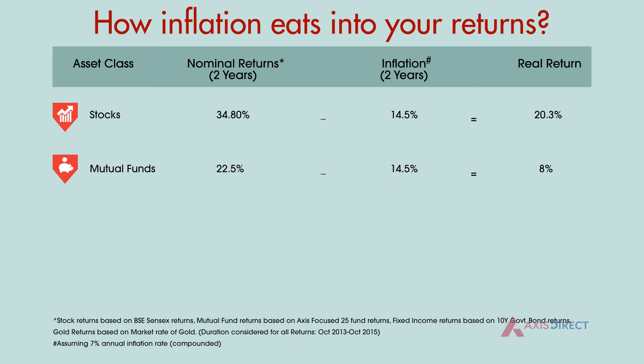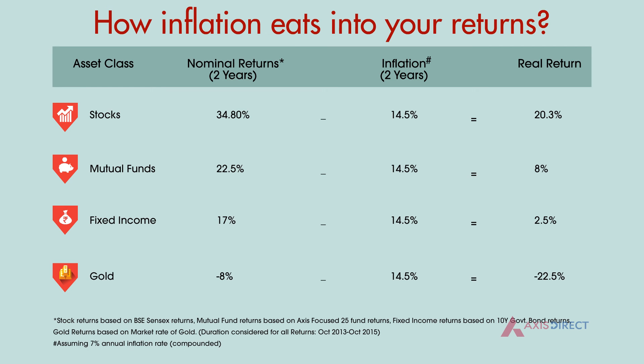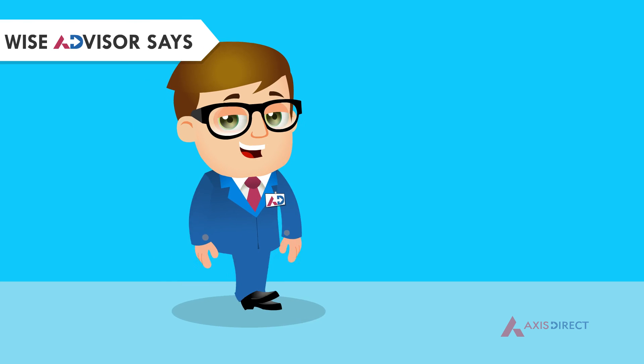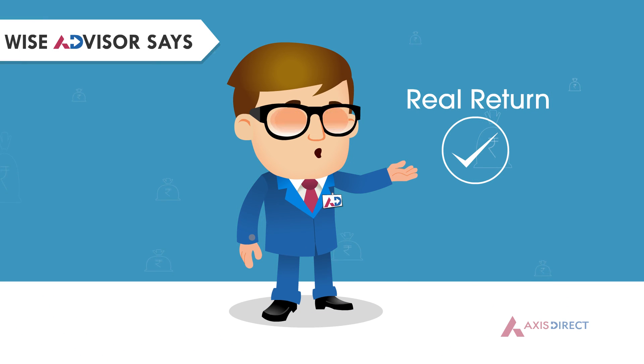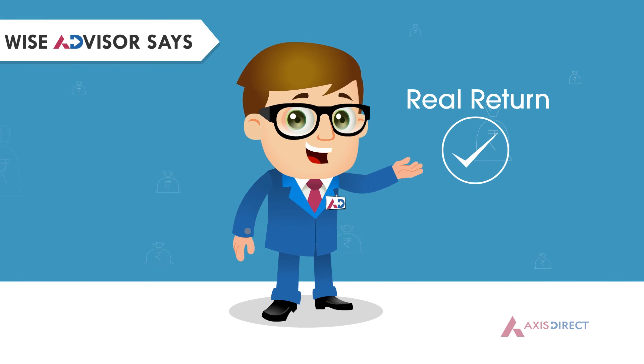Let us look at nominal returns for various types of investments. After we consider the effect of inflation, we see the return that is net of inflation, also called real return. We see that traditional investment classes like gold and fixed income fail to beat inflation and achieve a decent return. Always pay attention to real returns.